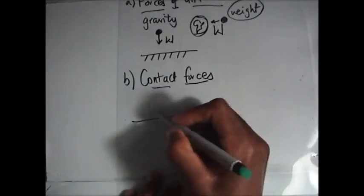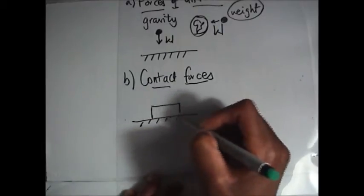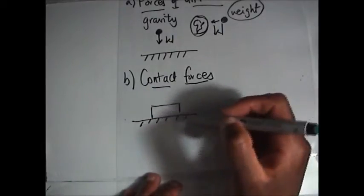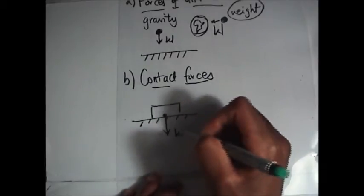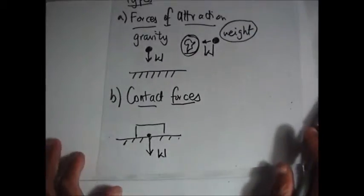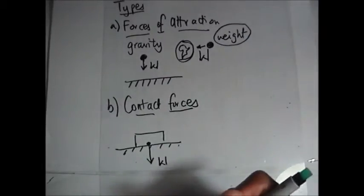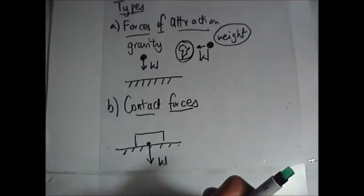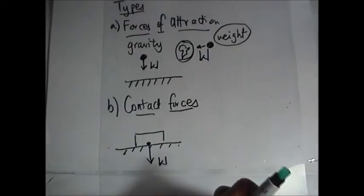Let's take for example a book resting on top of a table. Obviously it has weight because it is in the gravitational field of Earth. Everything that is in the gravitational field of an object experiences weight. Even when you're on the moon, you experience weight because you are in the gravitational field of the moon.